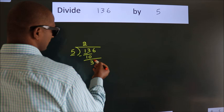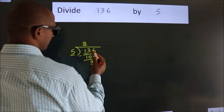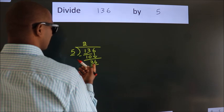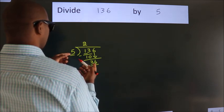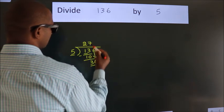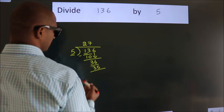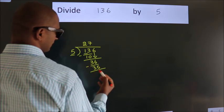After this, bring down the next number. So 6 down. So 36. A number close to 36 in the 5 table is 5 sevens, 35. Now we subtract. We get 1.